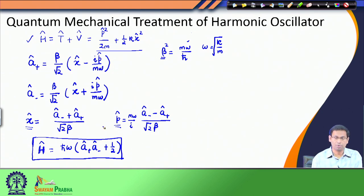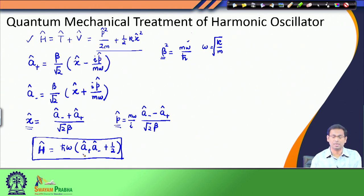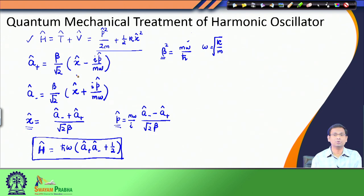In other words, we can write that since the commutator of a-minus and a-plus is 1, we can rewrite this result as a-minus a-plus minus a-plus a-minus equals 1. This is a very useful relation that we would use in our future discussion.